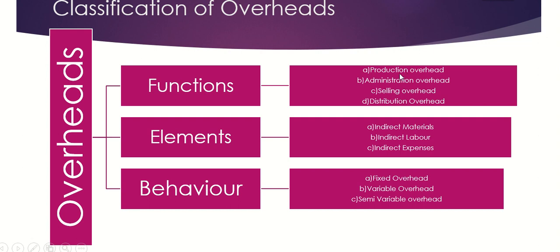Based on function, overheads are classified into four kinds: production overhead, administration overhead, selling overhead, and distribution overhead. Production overhead is also known as factory overheads, works overheads, or manufacturing overheads. It refers to indirect expenditure incurred in connection with production operations. Examples include indirect wages, factory power and lighting, depreciation of plant and machinery, depreciation of factory building, and repairs and maintenance.